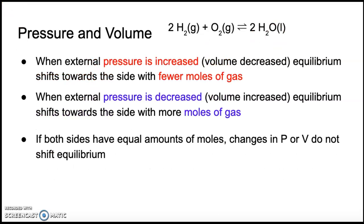Changing the pressure and volume of a system at equilibrium can also disturb that equilibrium and cause it to shift to counteract the effect. We have to remember Boyle's Law — the gas law relating pressure and volume — which states that these two things have an inverse relationship. So if we increase the pressure, the volume will go down. If we decrease the pressure, the volume will go up. Those have opposite effects.